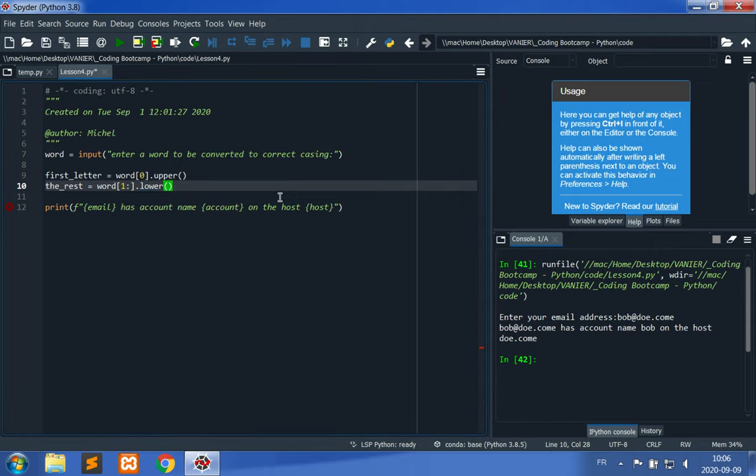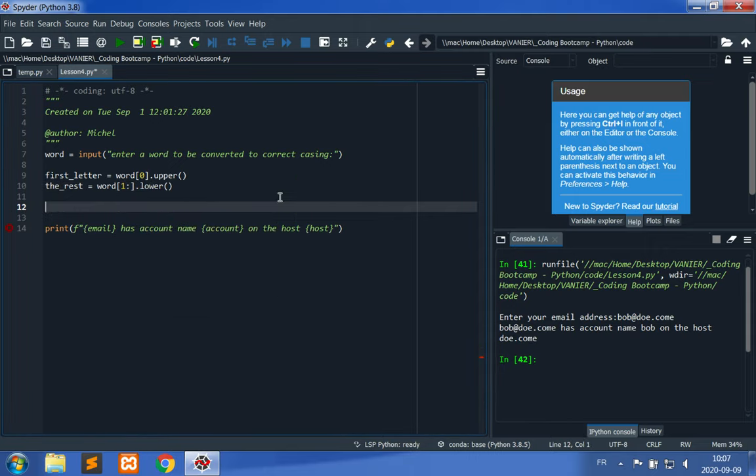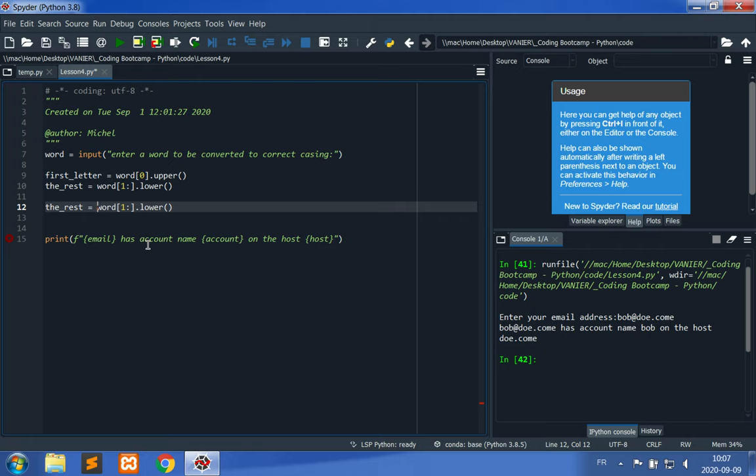If I were to try to use these as a function, it would not work. It would tell me that lower is undefined because it's not part of the base language. It's part of the base language, but only for strings. I would need to precede it with str.dot to specify that lower comes from the str type.